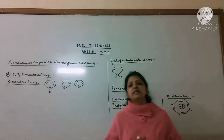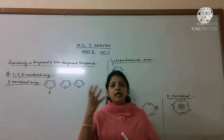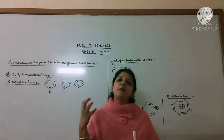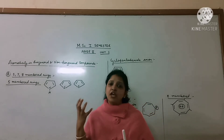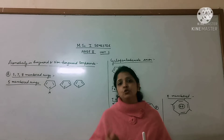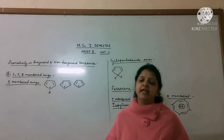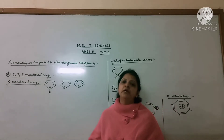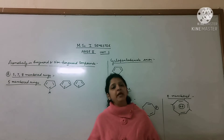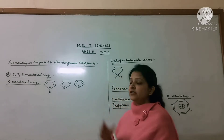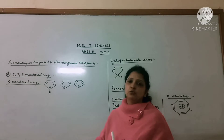Aromatic sextet means a closed loop of 6 electrons. We call it the aromatic sextet. This topic we started in our last video lecture and we will cover this topic today.